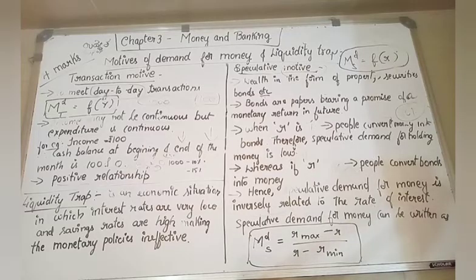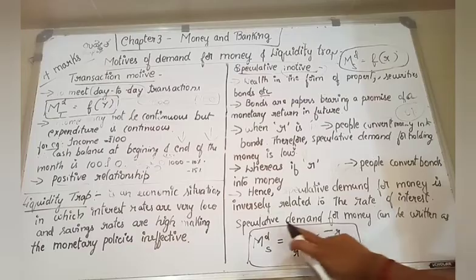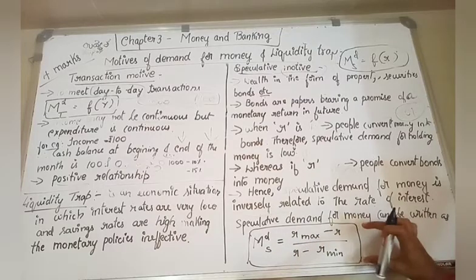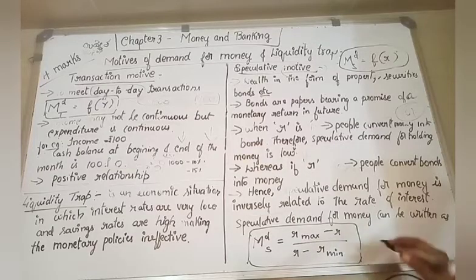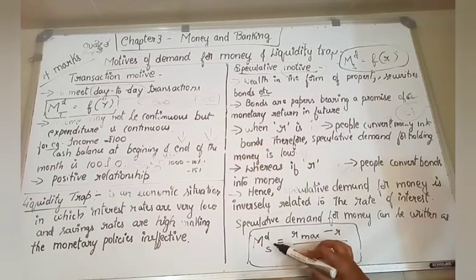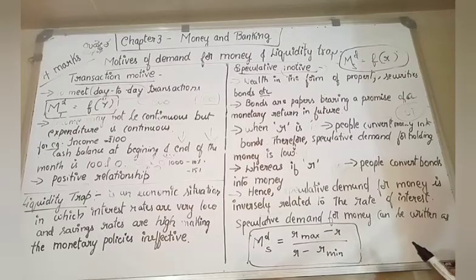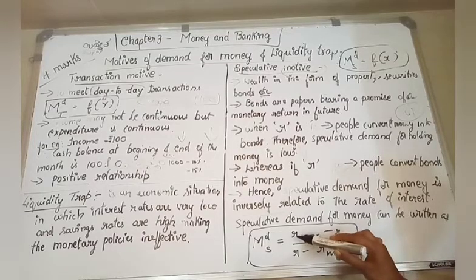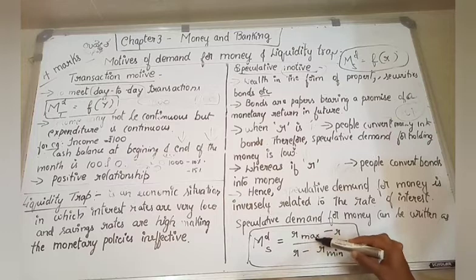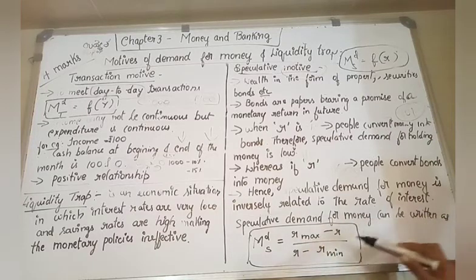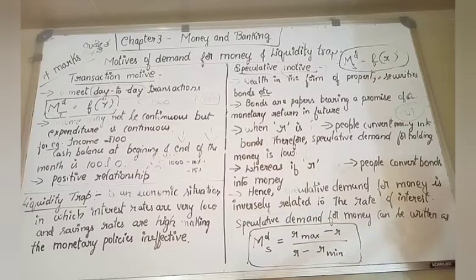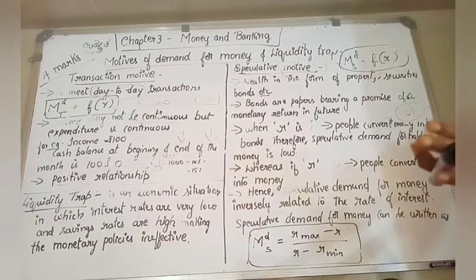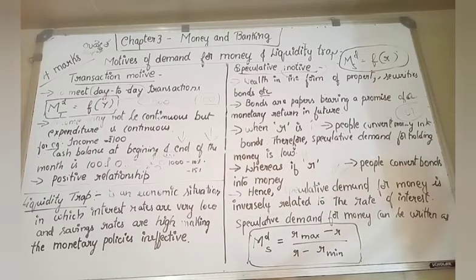I hope I have tried my best to make the concept clear to you all. One more thing is, speculative demand for money can be written in the following format. The formula is: demand for money under speculative motive is equal to R max, maximum rate of interest, minus rate of interest, divided by R minus minimum rate of interest, the least rate of interest the company is providing. So this much is about transaction motive and speculative motive.